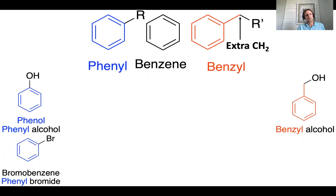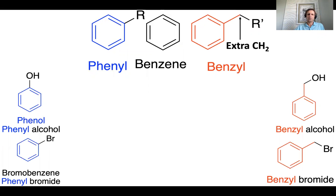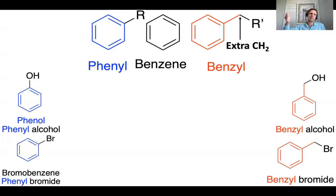Similarly, we can consider bromobenzene, which we can also call phenyl bromide — in that case the bromine is directly on the benzene ring. Contrast that with benzyl bromide, where we have the benzene ring, the extra CH₂ group, and then the Br group. The reactivity of phenol versus benzyl alcohol would be different because of where the OH is attached, and similarly we can do certain reactions on benzyl bromide that we just can't do on bromobenzene or phenyl bromide.